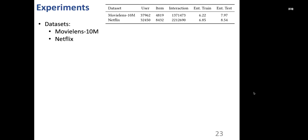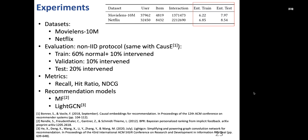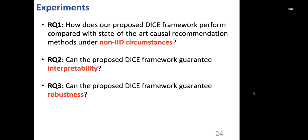We conduct experiments on two large-scale datasets, MovieLens 10M and Netflix, and here shows the basic statistics of the two datasets. We use the same evaluation protocol with CAUSE, where training data and test data are not IID. We use several widely adopted metrics, including recall, hit ratio, and NDCG. And two state-of-the-art base models are used, which are MF and LightGCN. We aim to answer these three research questions.